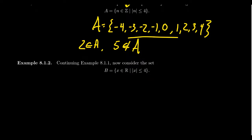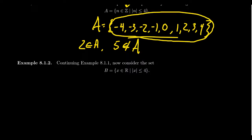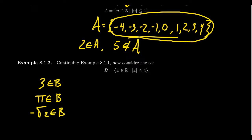Set B will clearly contain all nine elements from set A, but there are new things that belong as well. For instance, three still belongs, but we also gain things like pi (approximately 3.14159), whose absolute value is less than or equal to four. We can also include negative square root of two (approximately 1.4142). However, 11 halves — which is 5.5 — has absolute value greater than four, so it does not belong to set B. Also, one plus i does not belong to set B because one plus i is not a real number; the universal set dictates we only accept real numbers.